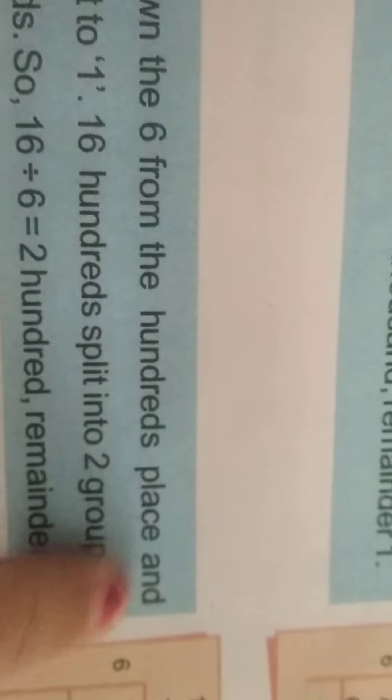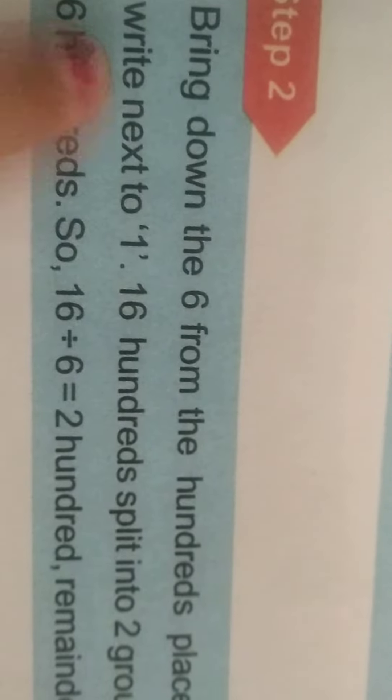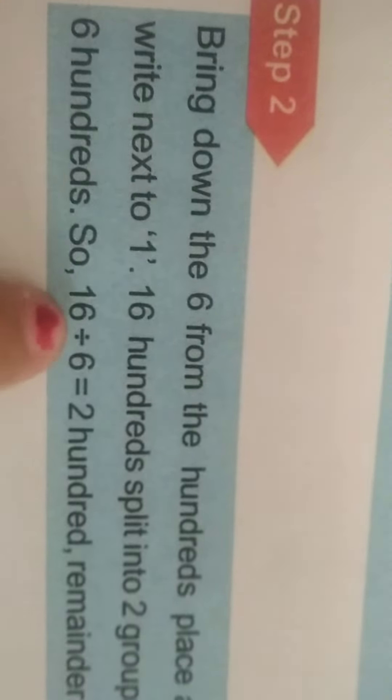Step 2: Bring down the 6 from the hundreds place and write it next to 1. 1,600 splits into 2 groups of 600s. 16 divided by 6 equals 200 with remainder 4. 6 times 2 is 12, so the remainder is 4.